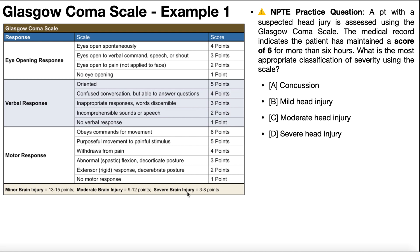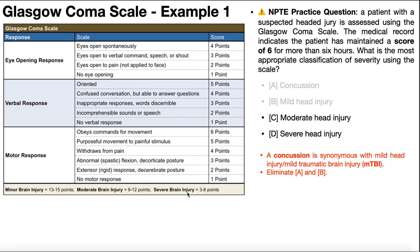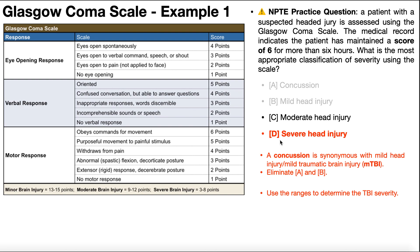Even if you hadn't memorized the ranges, you can use test-taking strategy. On the NPTE, if two answers are essentially identical — in this case, mild head injury and concussion are synonymous — you can eliminate both A and B. That leaves C and D, giving you a 50% chance instead of 25%. The answer is severe head injury, since a score of six falls between three and eight.